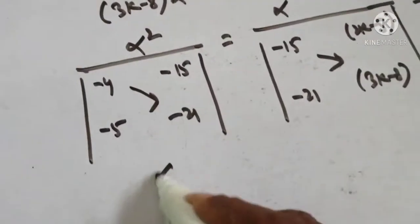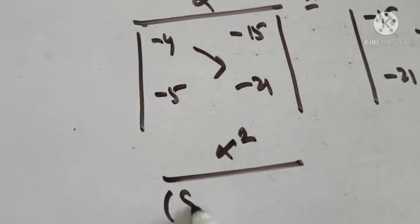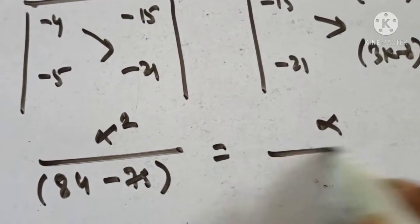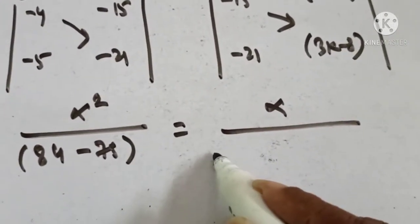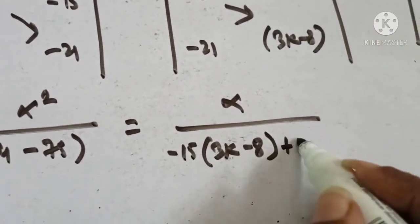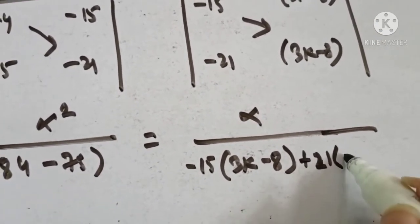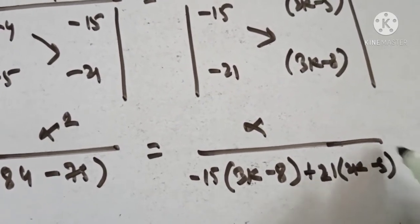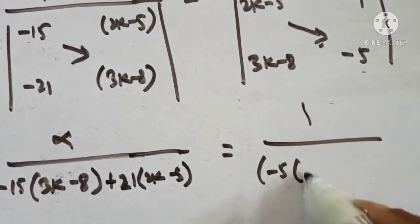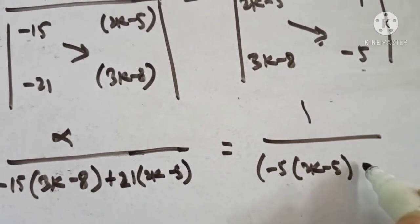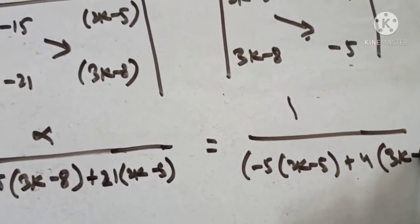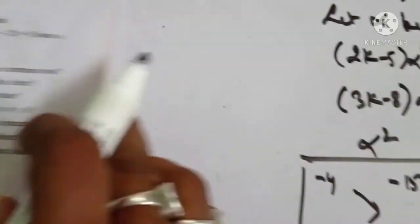So alpha squared by 84 minus 75, and alpha by: minus 15 times (3k minus 8) plus 21 times (2k minus 5), and 1 by: minus 5(2k minus 5) plus 4(3k minus 8).